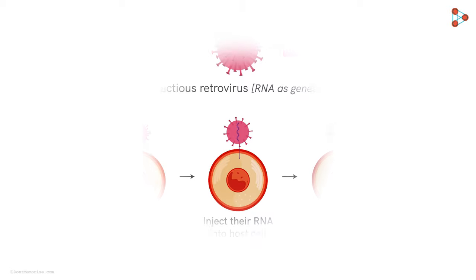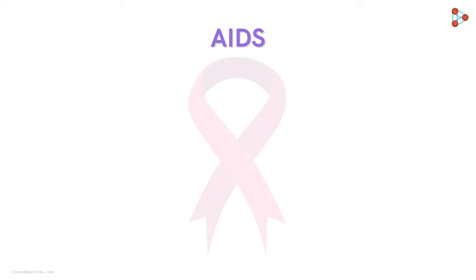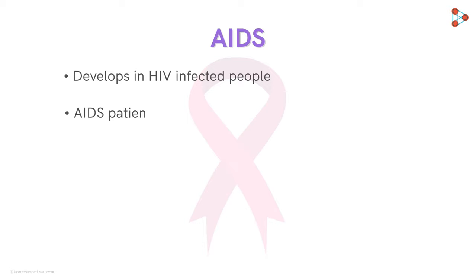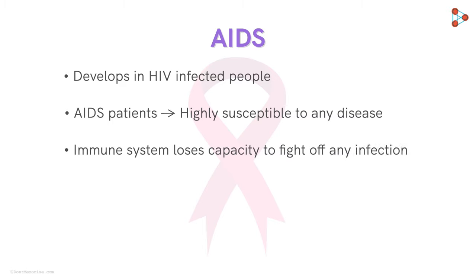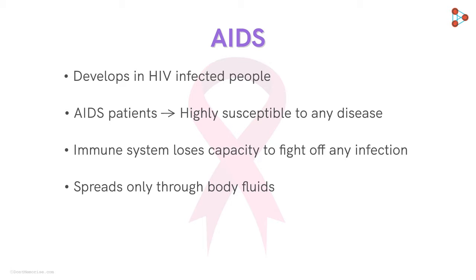AIDS develops in HIV-infected people if their immune system is severely compromised. People suffering from AIDS are highly susceptible to any disease, as their immune system loses the capacity to fight off even acute infections efficiently. The HIV has the tendency to stay active and spread only through body fluids, gaining access to a healthy host's body through blood, semen, placental transmission, and many other ways.